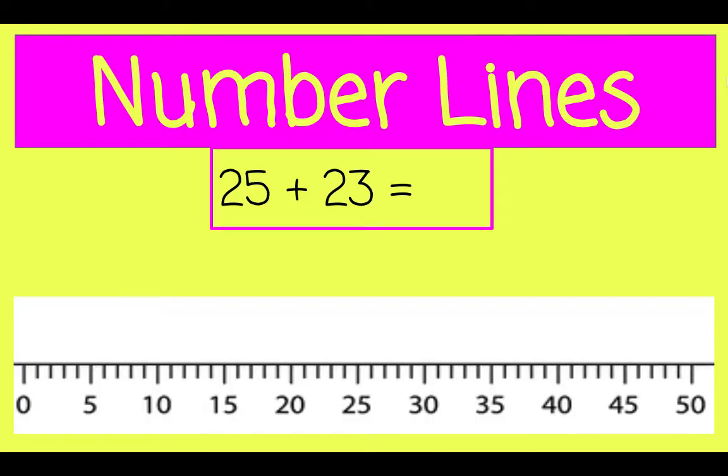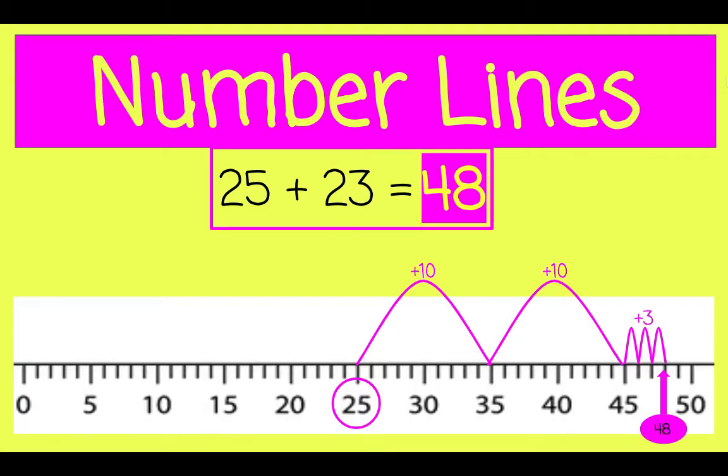Let's do a 2-digit number plus a 2-digit number. Let's begin on 25, and we'll take 23 jumps. Because we're working with a 2-digit number, we can make larger jumps. So let's start with a jump of 10, and another jump of 10, so that brings us to a distance of 20. 21, 22, 23. We landed on 48, so 48 is our sum.